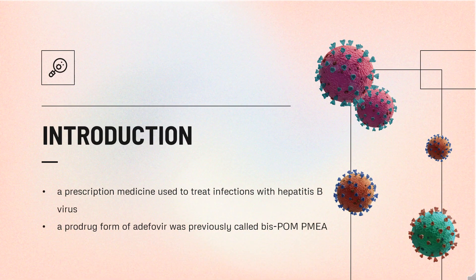Adefovir is a prescription medicine used to treat infections with hepatitis B virus. A prodrug form of Adefovir was previously called Bis-POM PMEA, with trade names Preveon and Hepsera. It is an orally administered nucleotide analog reverse transcriptase inhibitor.